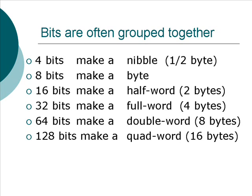Bits are often grouped together. The most common grouping is 8 bits, which makes a byte. 4 bits make a nibble, or half a byte. 16 bits make a half word, or 2 bytes. 32 bits, or 4 bytes, makes a full word. 64 bits is a double word, and 128 bits is a quad word.